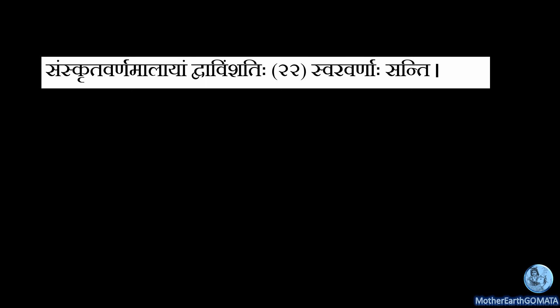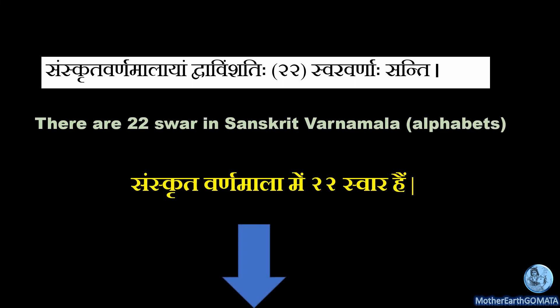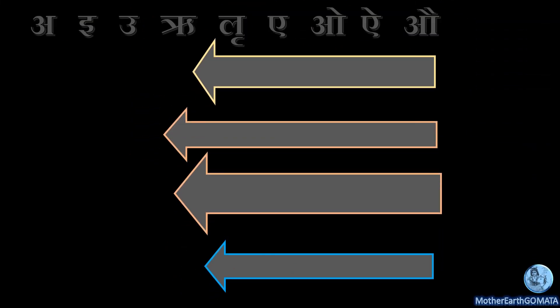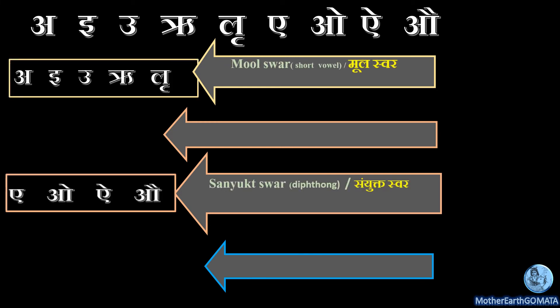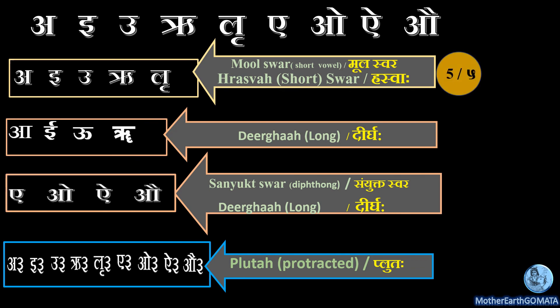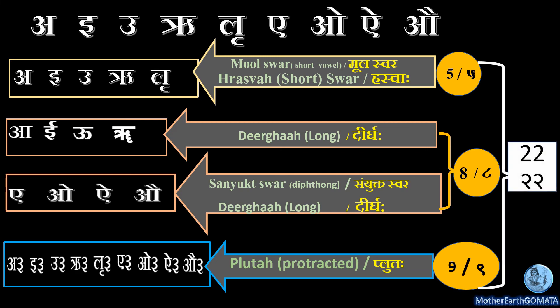Sanskrit Varna Mala — 'Dvavinshatihi Swaravarna Santi' — which means in Sanskrit Varna Mala, 'Dvavinshatihi' — in Sanskrit the number 22 is known as Dvavinshatihi — Swaravarna, meaning there are 22 Swar in Sanskrit Varna Mala. To conclude: initially we saw there are 9 Swar in Sanskrit Varna Mala of which 5 are Mul Swar and 4 are Sanyukt Swar. Then, as stated by Panini in Ashtadhyayi, these 9 Swar are classified into 3 types — Hraswa, Dirgha, and Pluta — so there are a total of 22 Swar in Sanskrit Varna Mala.